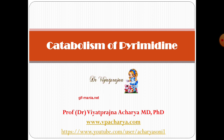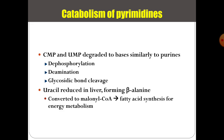It is a small topic, and similar to purine catabolism, pyrimidines are also degraded to bases through dephosphorylation, deamination, and glycosidic bond cleavage. Uracil is reduced in the liver, forming beta-alanine, which is finally converted to malonyl coenzyme A, and if you recall from lipid metabolism, fatty acid synthesis can be done from this.